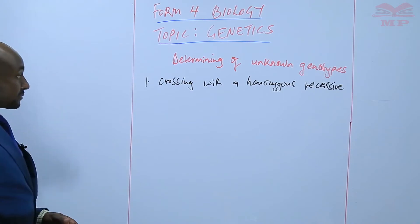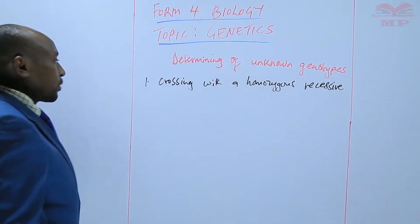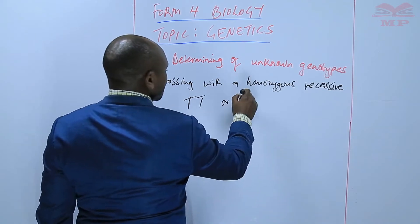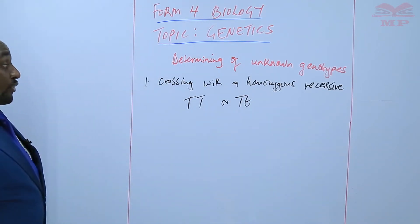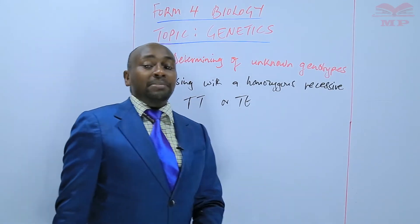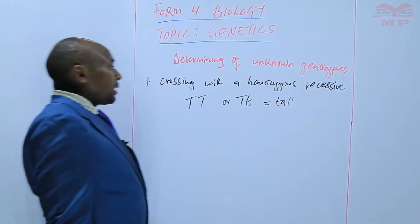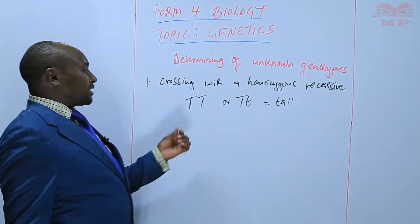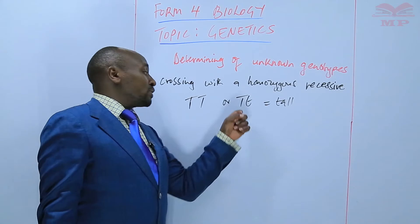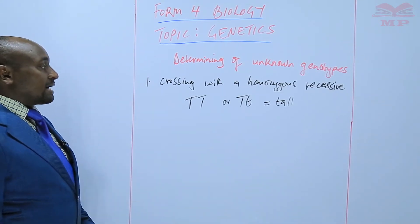For example, I may have a tall plant, but I don't know whether that tallness is as a result of the genotype capital T, capital T, or capital T, small t. Because in both cases, they are tall. So what we observe is the phenotype — the outward appearance — and in this case the outward appearance tells us they are tall. But we want to find out whether that tallness is due to TT or Tt. So we can do that by crossing with a homozygous recessive.